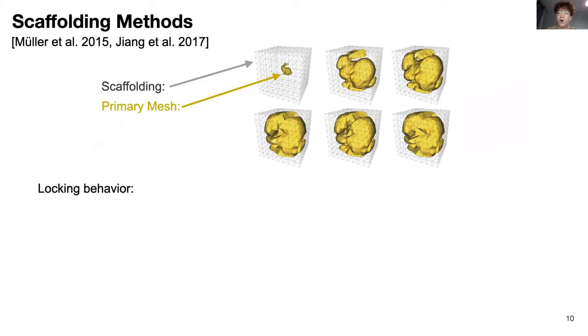Alternatively, and more recently, scaffolding-based methods have been applied. To enforce bijectivity, negative space is discretized with scaffolding. However, without refinement, this triangulation introduces artificial locking from shared elements as it distorts with the primary mesh.